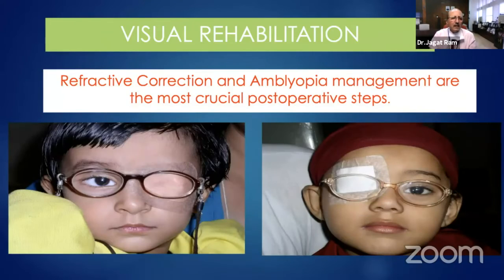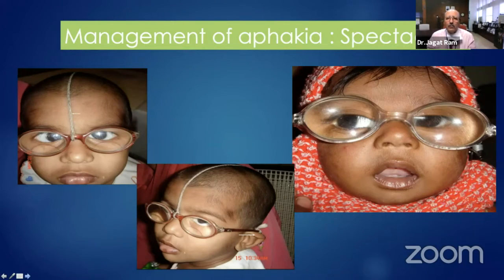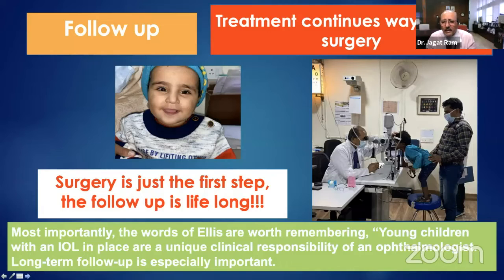Occlusion therapy is very, very critical, particularly for the management of amblyopia. Some cases with microphthalmia or other problems require special thick spectacle frames. Surgery is just the first step, and the follow-up is extremely important. You have to examine the child very, very carefully. The words of Iliff are worth remembering: young children with an IOL in place are the unique clinical responsibility of an ophthalmologist, and long-term follow-up is especially important. We have follow-up of 30 to 35 years of these children.